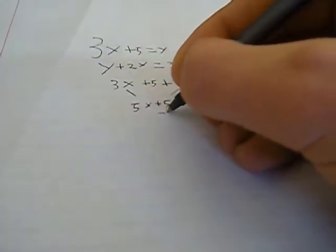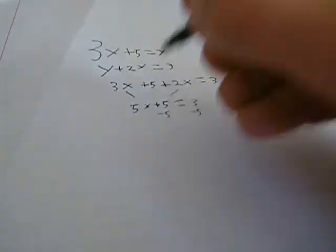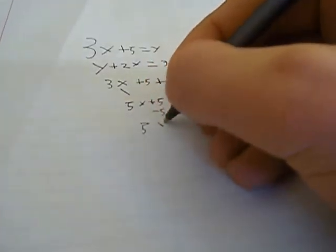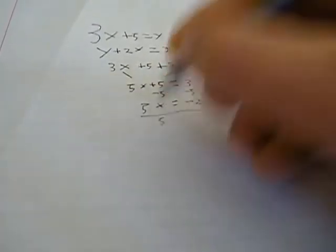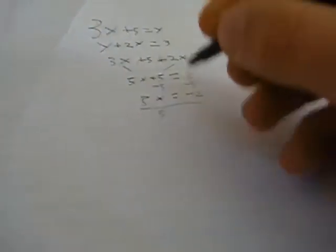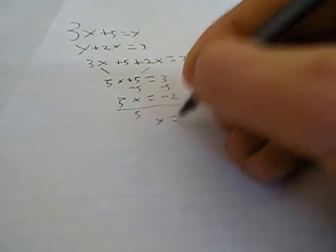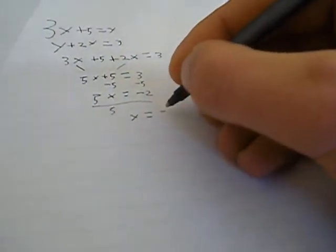Subtract 5 from both sides. 5x is equal to negative 2. Divide the whole thing by 5. You get x is equal to negative 2 fifths.